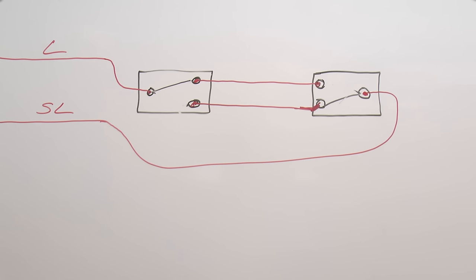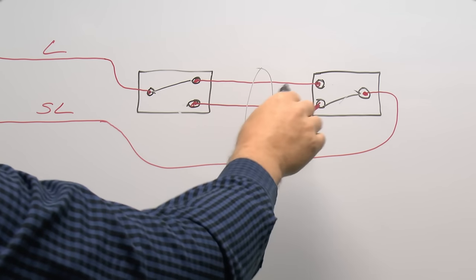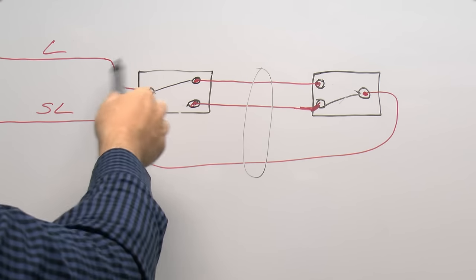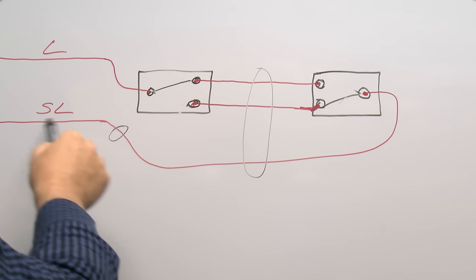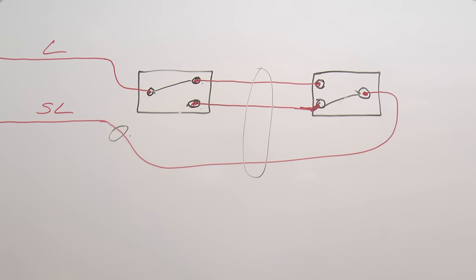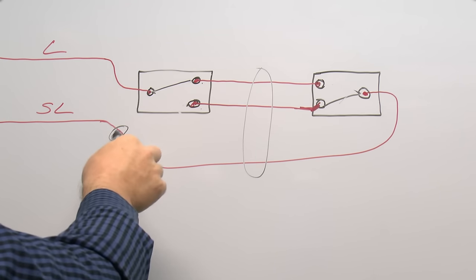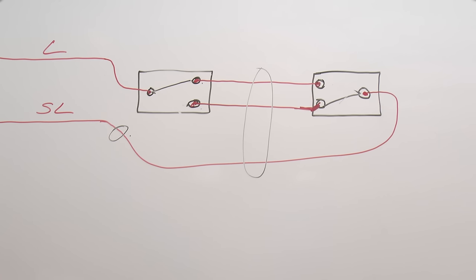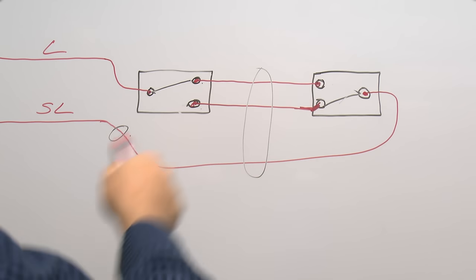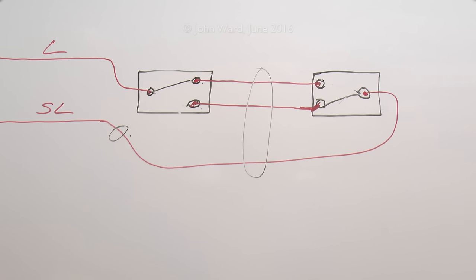This conduit method can also be used with a three-core-and-earth cable, though at the switch end you would need some additional connections in the back box since one wire needs to be jointed there. You do need to make sure the wires are connected to the correct terminals — if not, you can end up with unusual combinations where one switch only works if the other is in a particular position, or one of them doesn't work at all.